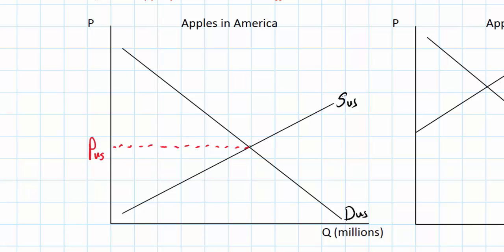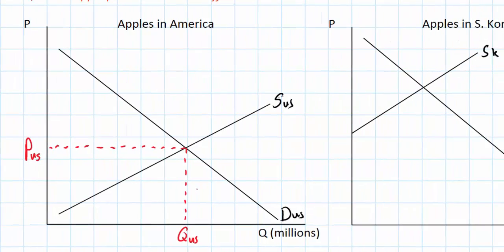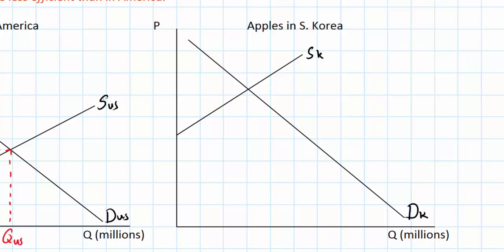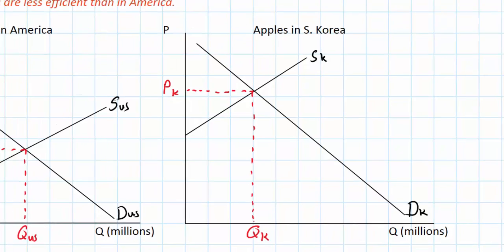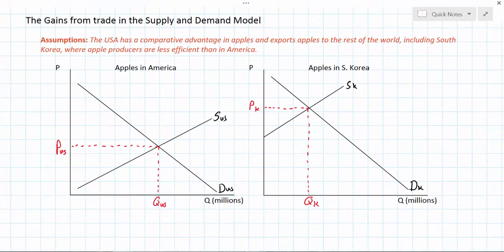I'll call this the US price and the quantity demanded the US quantity. Likewise, in South Korea where the cost of producing apples is much higher, the price is higher — I'll call this price PK for the Korean price and QK for the Korean quantity. Let's assume that initially neither country is trading, so the price and quantity in each market is determined solely by domestic demand and supply.